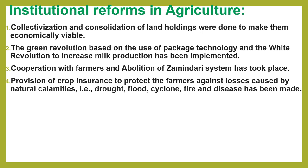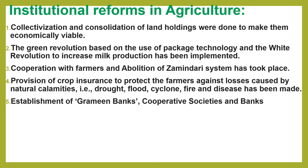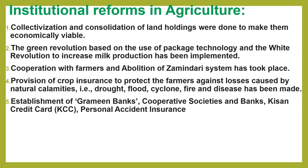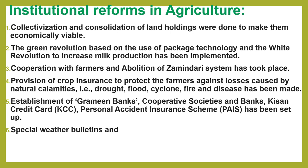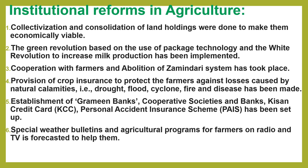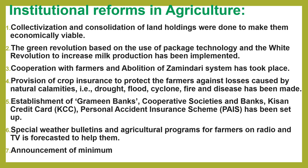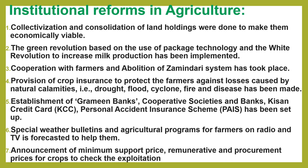5. Establishment of grameen banks, cooperative societies and banks, Kisan credit card and personal accident insurance scheme was set up. 6. Special weather bulletins and agricultural programs for farmers on radio and TV are broadcast to help them. 7. Announcement of minimum support price, remunerative and procurement prices for crops to check the exploitation of farmers is done.